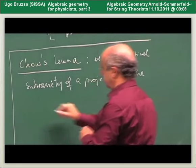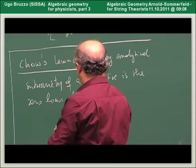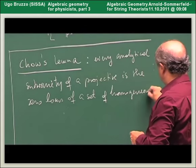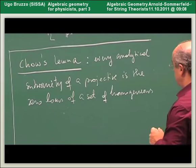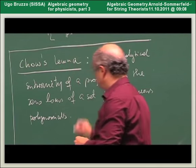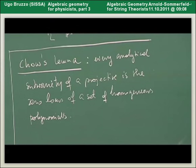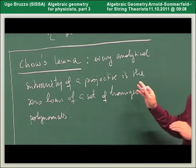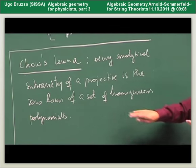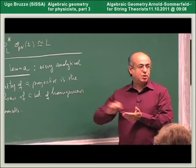which means it is the zero locus of a set of homogeneous polynomials — polynomials in the homogeneous coordinates. So what we get if we have a positive line bundle is a holomorphic map to projective space, and the image will be an analytical sub-variety a priori. Then Chow's Lemma tells us that the sub-variety is actually algebraic — it is cut by algebraic equations, by polynomials.